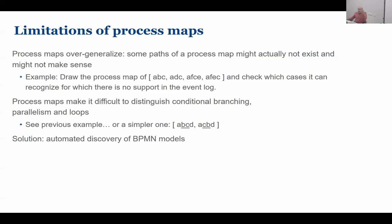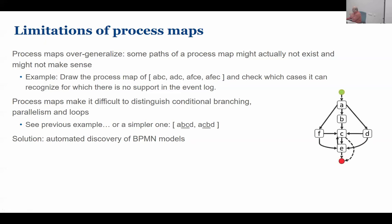Consider four activities A, B, C, D and an event log with two traces: A, B, C, D — that is A followed by B followed by C followed by D — and A, C, B, D. They are identical except that B and C are swapped. If I draw the process map of this event log I get this result.